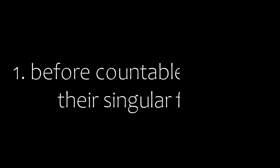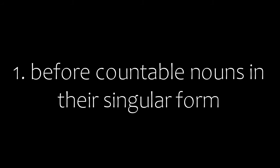We use the articles 'A' and 'AN' first before countable nouns in their singular form. For example: a student, a chair, a flower, an ant, an apple, etc.